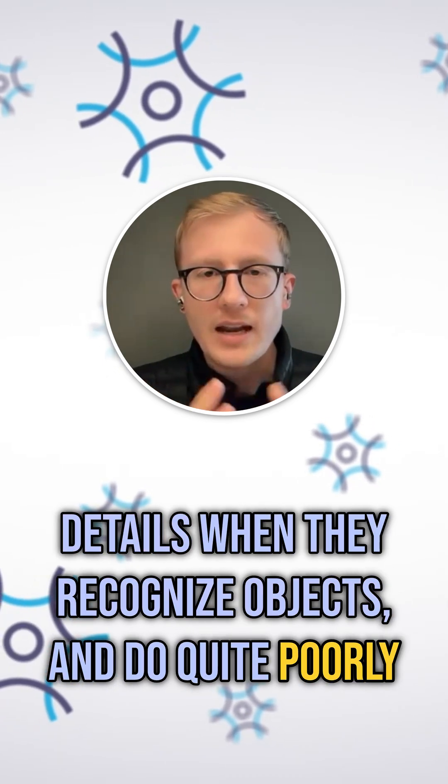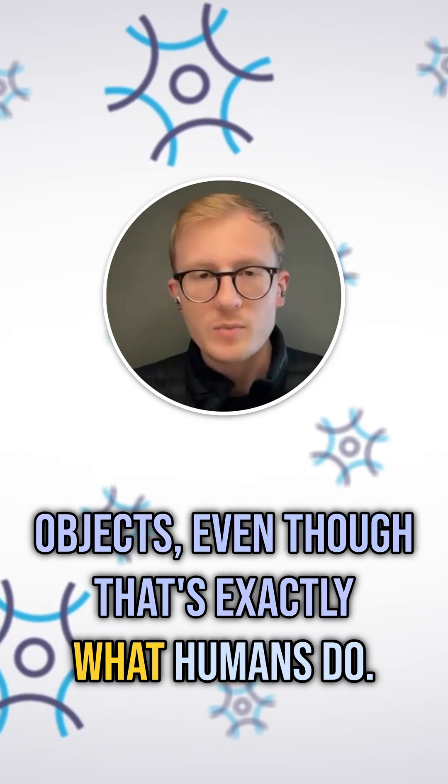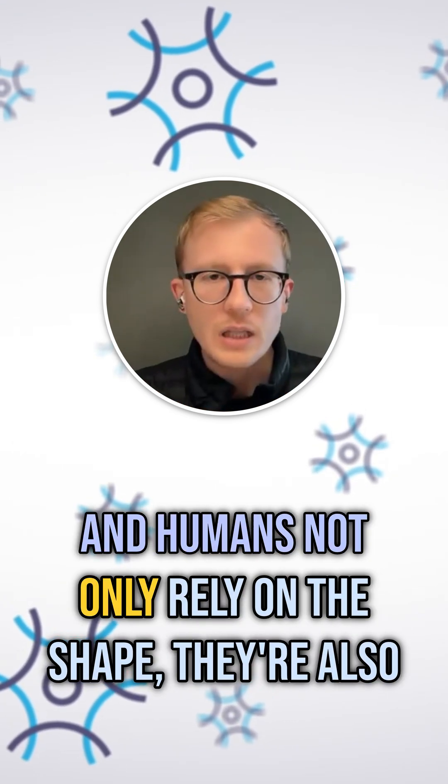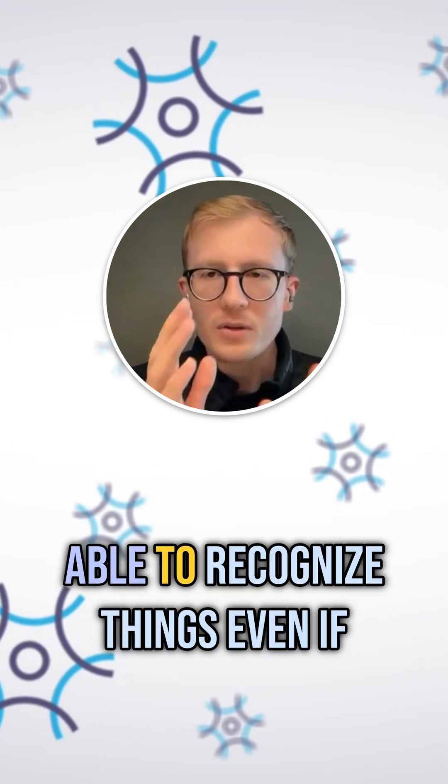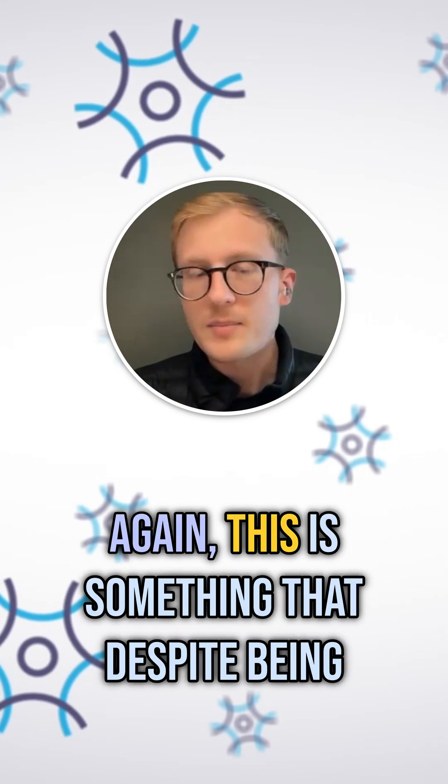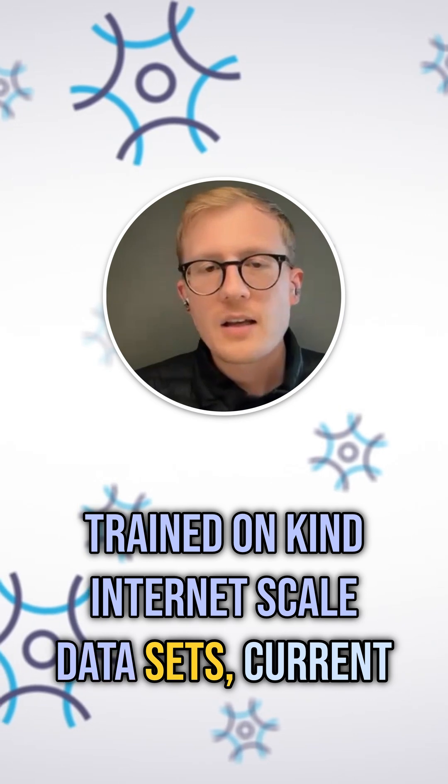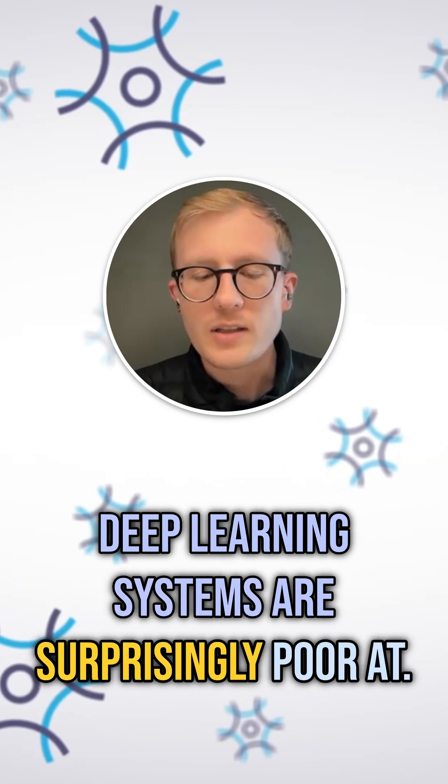They do quite poorly at just looking at the global shape as a way of recognizing objects, even though that's exactly what humans do. Humans not only rely on the shape, they're also able to recognize things even if they're rotated in unusual ways. Again, this is something that despite being trained on internet scale datasets, current deep learning systems are surprisingly poor at.